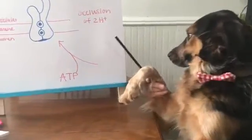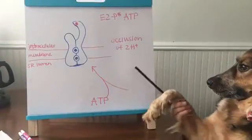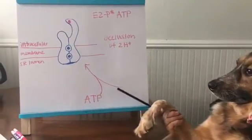In step three, the occlusion of the two hydrogen ions closes the pump and uses energy derived from ATP.